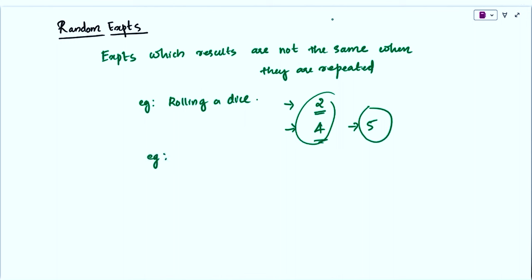Another example is tossing a coin. On tossing a coin, we will get two outcomes: one is head and one is tail, which are totally different. So tossing a coin is also an example of a random experiment.